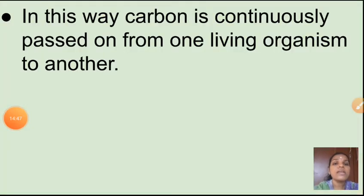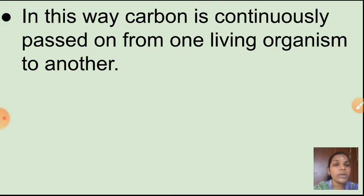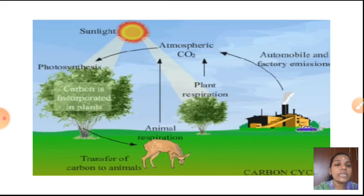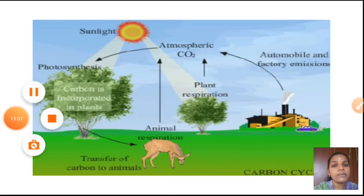In this way, carbon is continuously passed from one living organism to another. I hope you understood the steps of the carbon cycle and what is meant by the carbon cycle. Now let's look at a diagram of the carbon cycle.